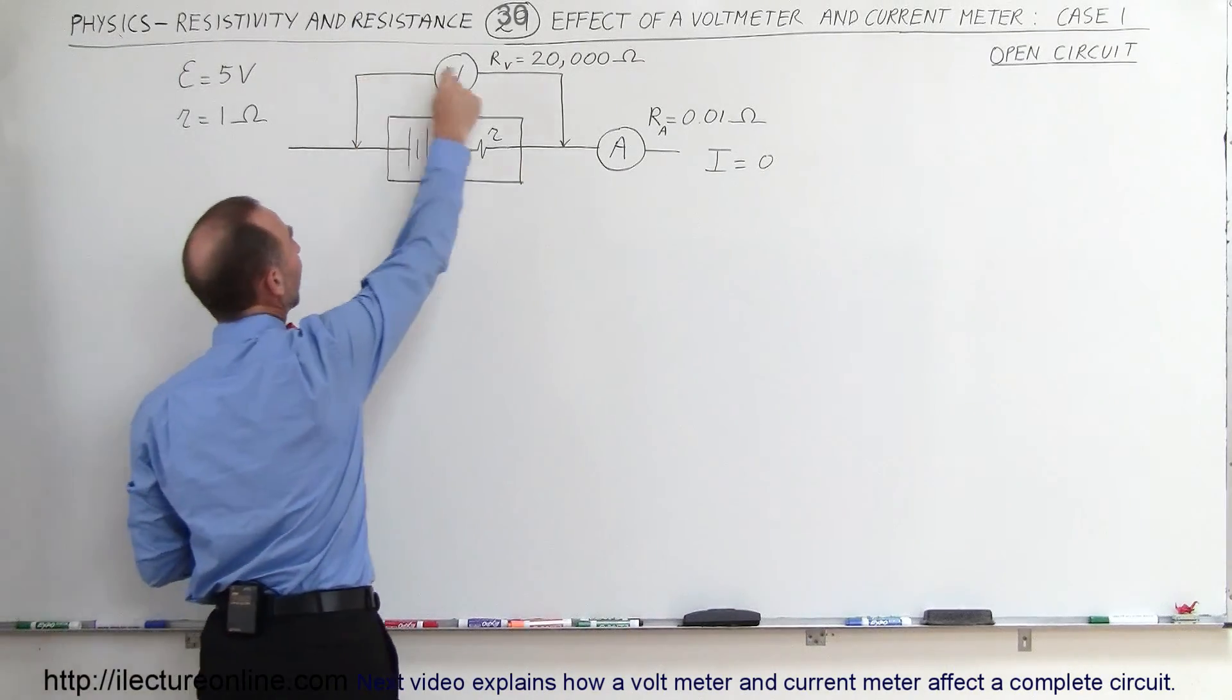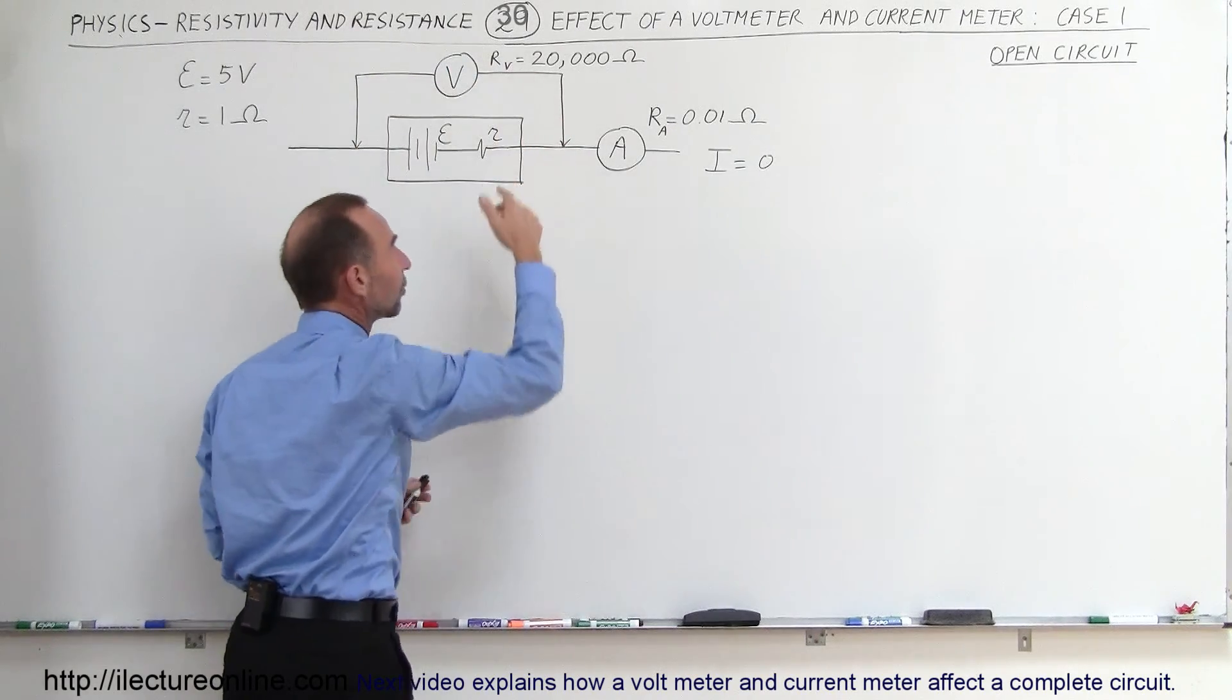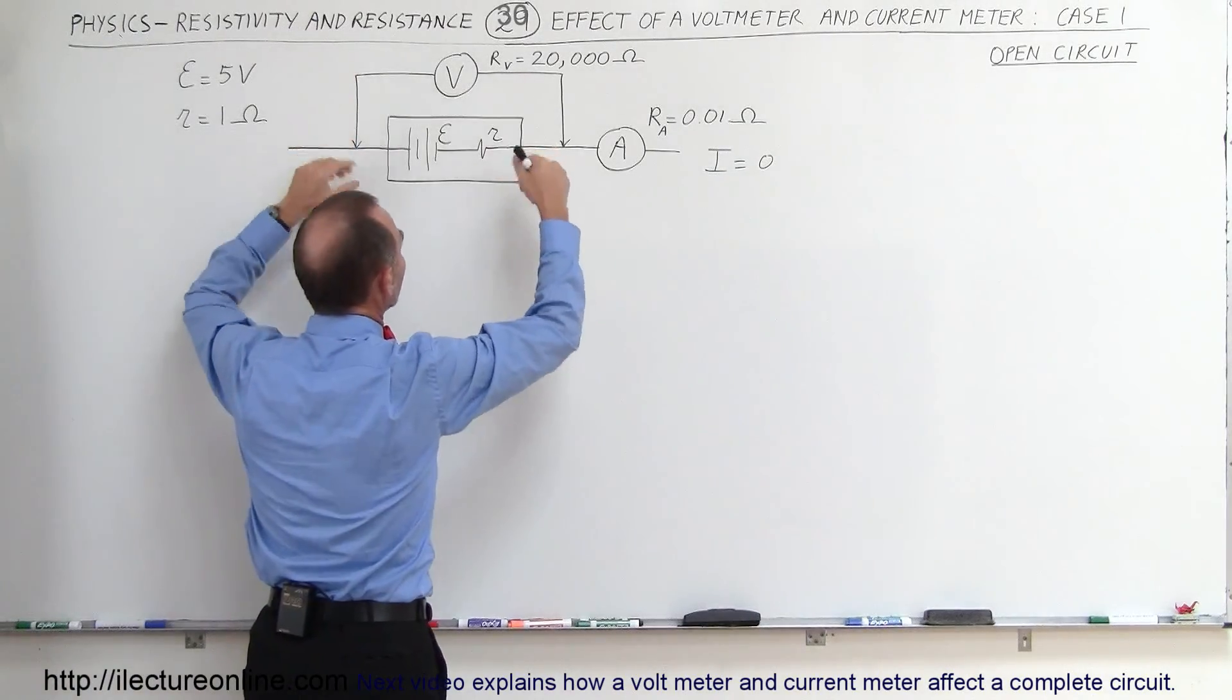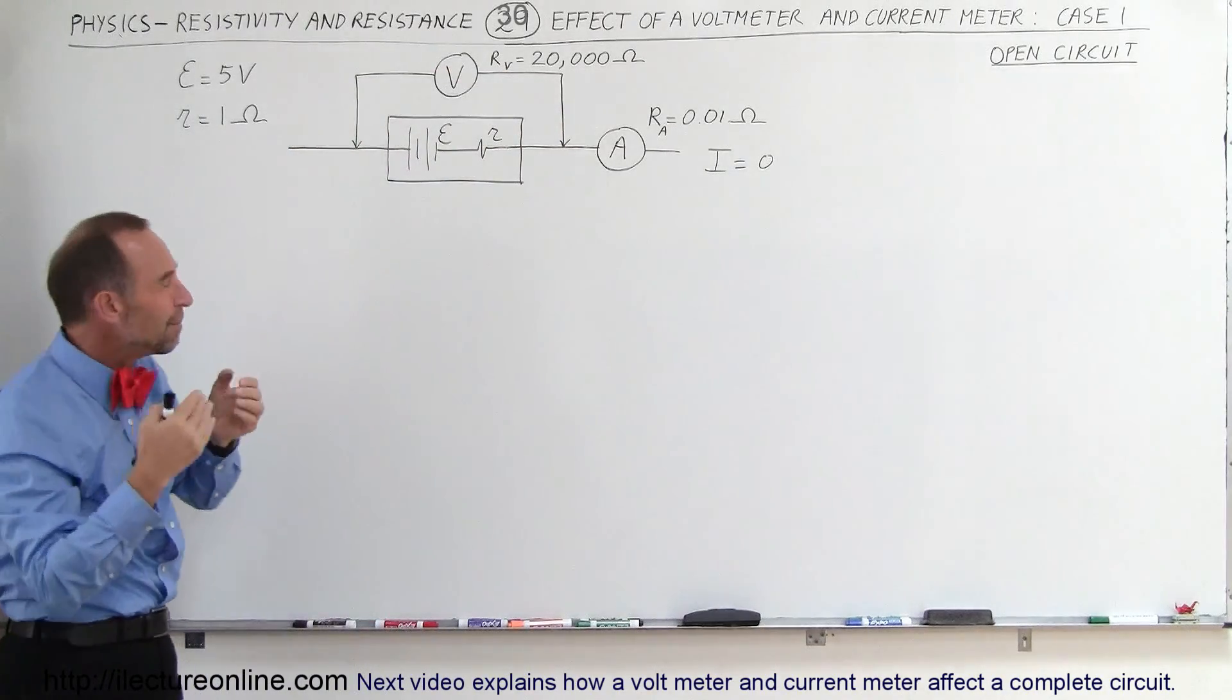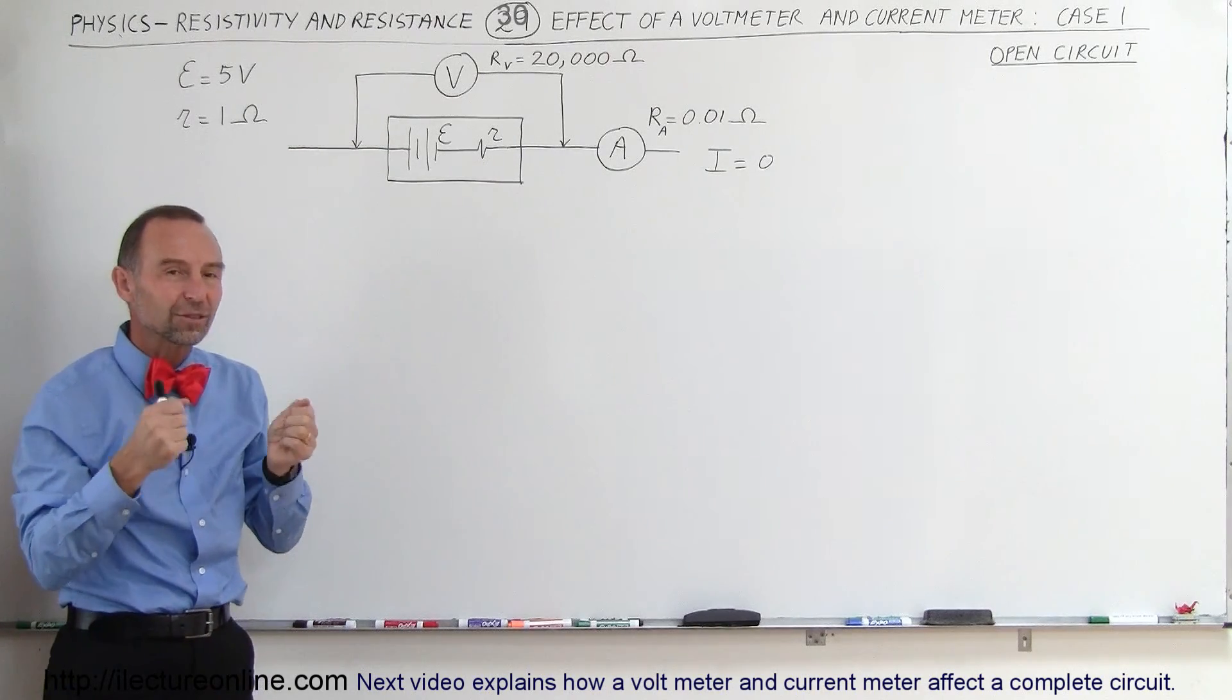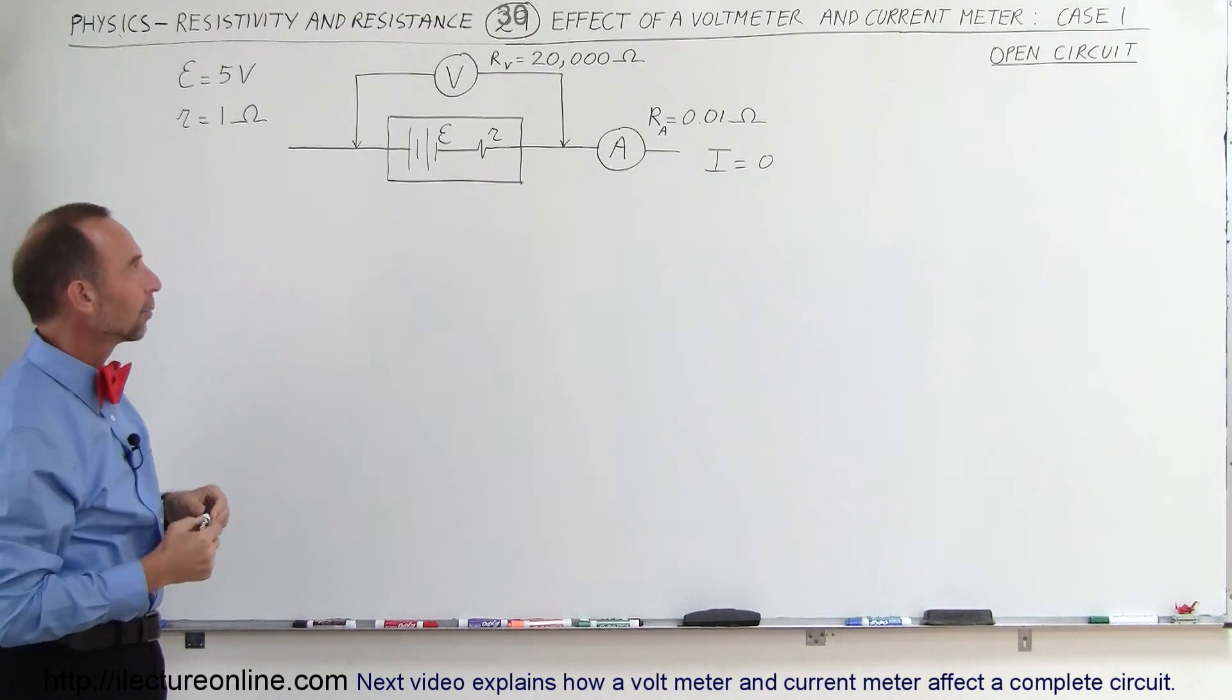Some current will be flowing through this part of the circuit. So even though you didn't intend to, this will now be a parallel path. And so the voltmeter will, in essence, measure the voltage of the parallel path. It's an unintended consequence of measuring the voltage. There's always going to be some small effect on the circuit.